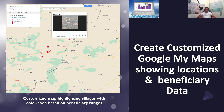Hi there, welcome to this Analyze-it YouTube tutorial. Today, I will walk you through the process of adding locations and information to a map, step by step. Together, we will craft a user-friendly map and even generate a shareable web link for easy viewing. Our focus will be on creating a customized map highlighting various villages from a project and showing the beneficiary data. The real magic happens when we color-code each village based on beneficiary ranges, adding an extra layer of visual insight. We will achieve all of this effortlessly using the power of Google My Maps.